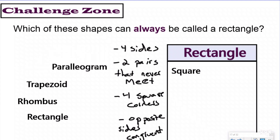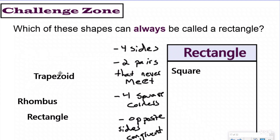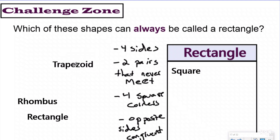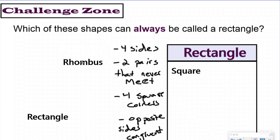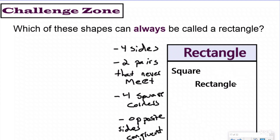Parallelogram: four sides, two pairs that never meet, but does not have four square corners — out. Trapezoid: four sides, but only one pair of sides that never meet — didn't even meet the second requirement — out. Rhombus: four sides, two pairs that never meet, but does not have four square corners — out. Rectangle: obviously a rectangle. So which shapes can always be called a rectangle? A square and a rectangle.